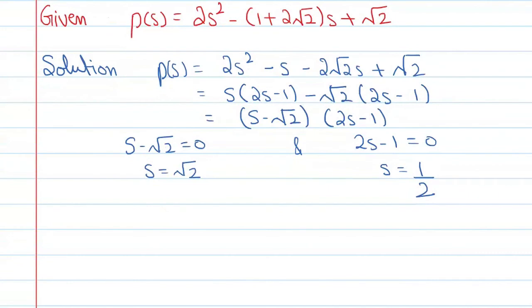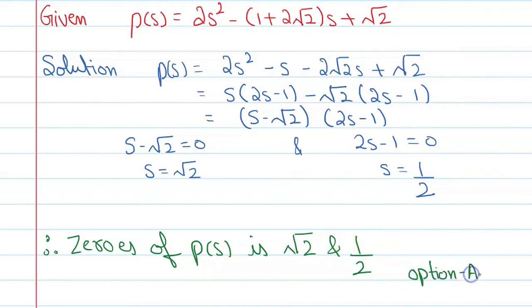Therefore, zeros of polynomial p(s) are √2 and 1/2, and the correct option is A. Thank you.